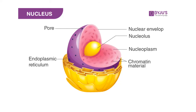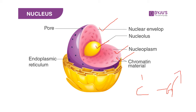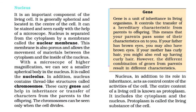You can see the inner structure of the nucleus: the nuclear envelope, nuclear pore, a round structure called the nucleolus, nucleoplasm, and chromatin material which is converted into chromosomes. In the book, the nucleus is described as spherical and located in the center of the cell. It is separated from the cytoplasm by a nuclear membrane. The nuclear membrane is porous and allows the movement of materials between the cytoplasm and the inside of the nucleus.